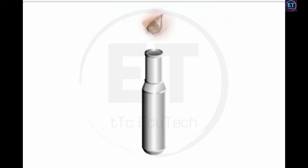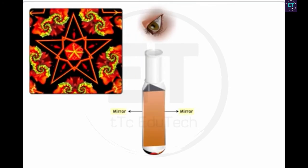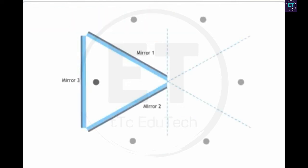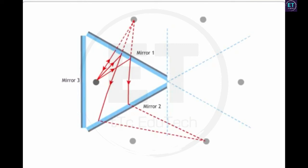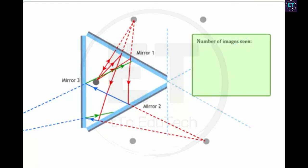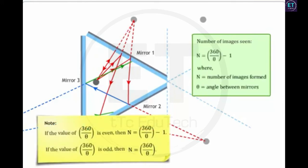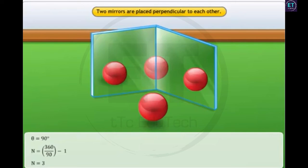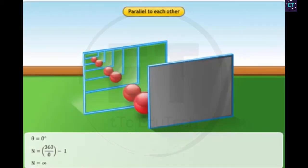Have you ever wondered how images are formed in a kaleidoscope? A kaleidoscope uses three mirrors placed at an angle to produce multiple images. When mirrors are placed at an angle, the reflected ray from the first mirror is incident on the second mirror, which in turn reflects it back to mirror 3. Thus, multiple images of the object are formed. The number of images seen in such an arrangement can be calculated using the formula n = (360 / theta) − 1. If the angle between the mirrors, theta, is 90 degrees, then the number of images formed is 3. If two parallel mirrors are placed with their reflecting surfaces facing each other, the mirrors form an infinite number of images between them, because the angle between the mirrors placed in this manner is 0.